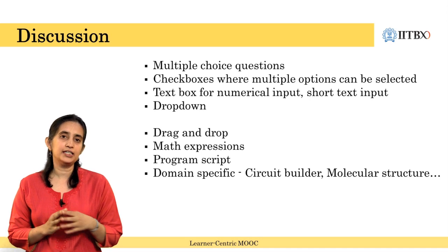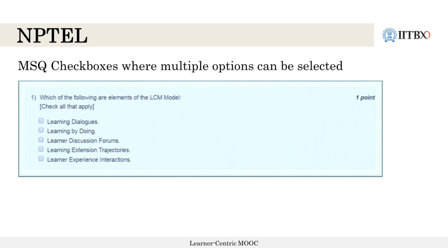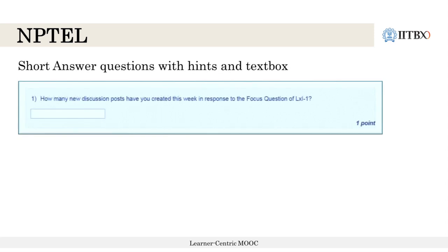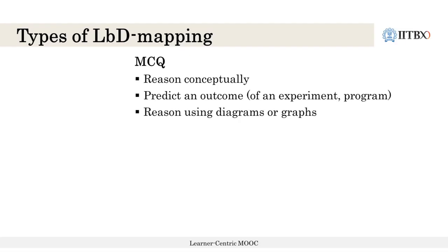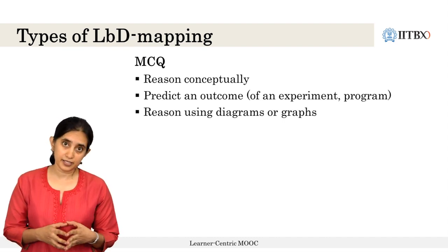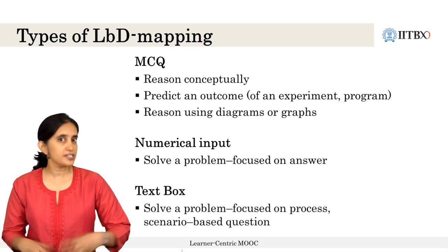On the NPTEL platform you would encounter multiple choice questions (MCQs) with a single correct answer, or multiple select questions (MSQs) where more than one answer can be selected. You will also encounter text box types called short answer questions or numerical text input questions, and you may see hints in these questions. The pedagogical perspective and the platform formats are mapped to each other — for example, multiple choice questions can be used for conceptual reasoning, prediction of an outcome, or reasoning with representations. Numerical input problems can be used for short answer problem solving, and a text box for scenario-based questions.